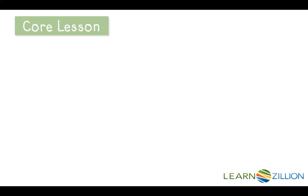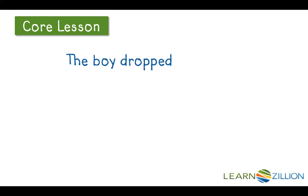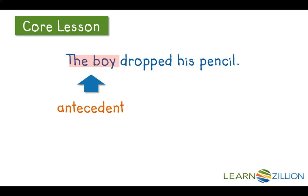Take the following sentence: 'The boy dropped his pencil.' Who dropped the pencil? The boy — this is the antecedent. So the pronoun here is 'his.' Now, the boy is singular and masculine, and the pronoun 'his' is singular and masculine, so our antecedent and pronoun agree.